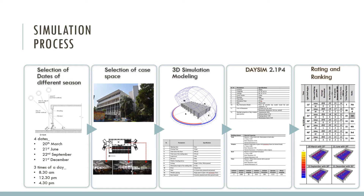The simulation process itself consists of various steps. Firstly, the equinox and solstice dates for Dhaka were determined to represent different seasons: 20th March, 21st June, 22nd September, and 21st December. The times of day were fixed at 8:30 a.m., 12:30 p.m., and 4:30 p.m. Then the case space was selected and 3D modeling in simulation software was done. It was then exported to DaySim and simulation was done on an hourly basis with annual climatic data. At the end, rating and ranking was done to identify the most effective light shelf angles.